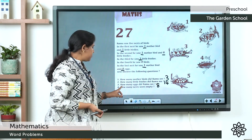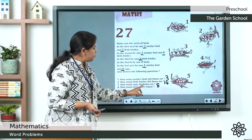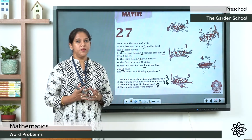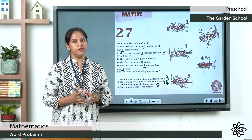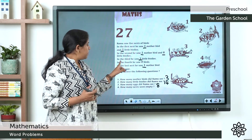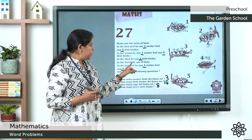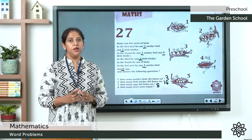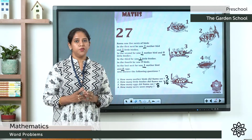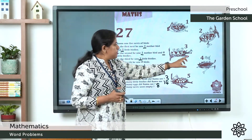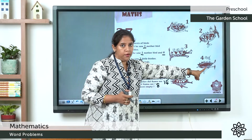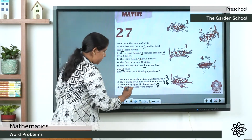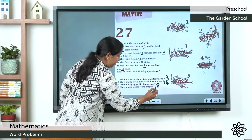The last question: how many nests were empty? If you look at it, in the fourth nest, he saw zero birds. That nest was empty. How many nests were empty? Only one. One nest was empty. The answer is 1.